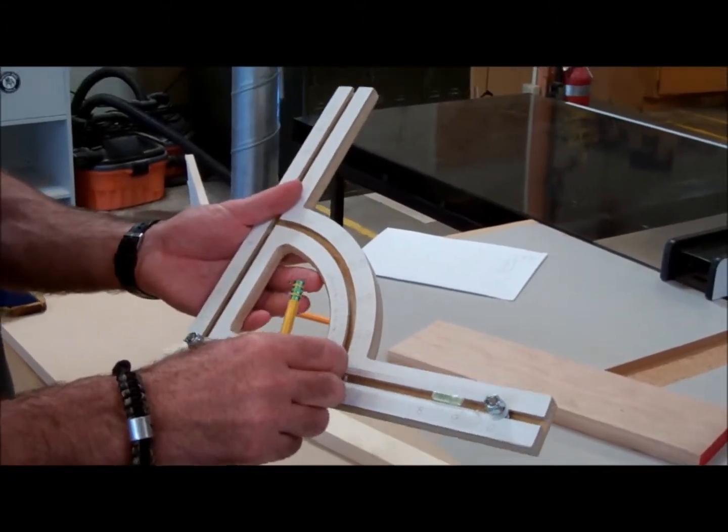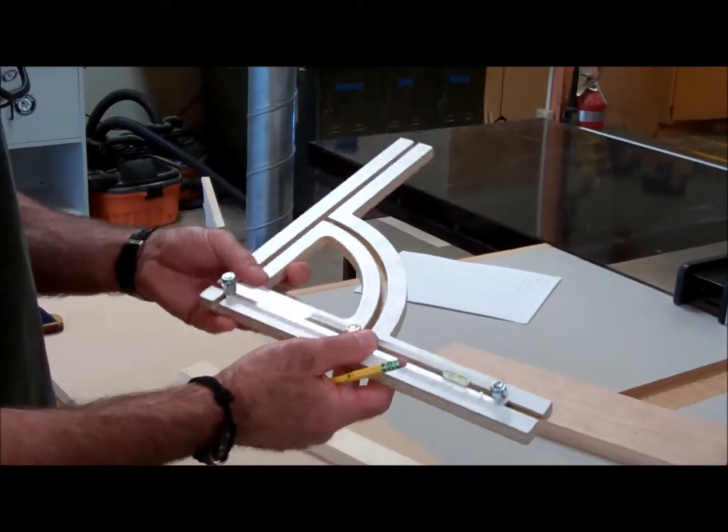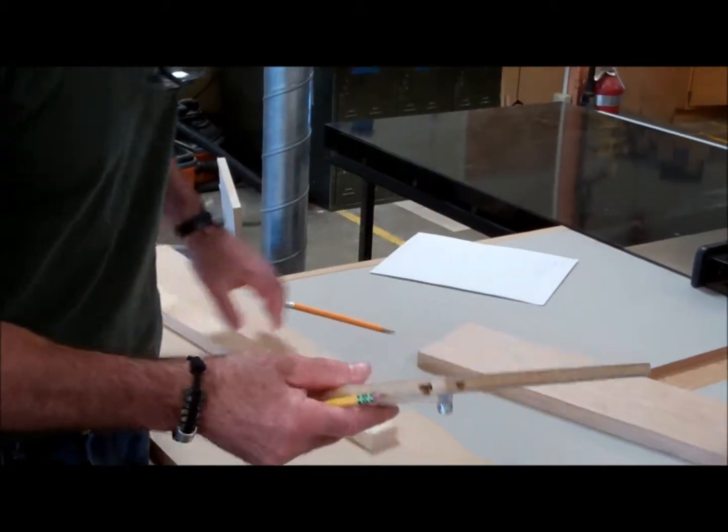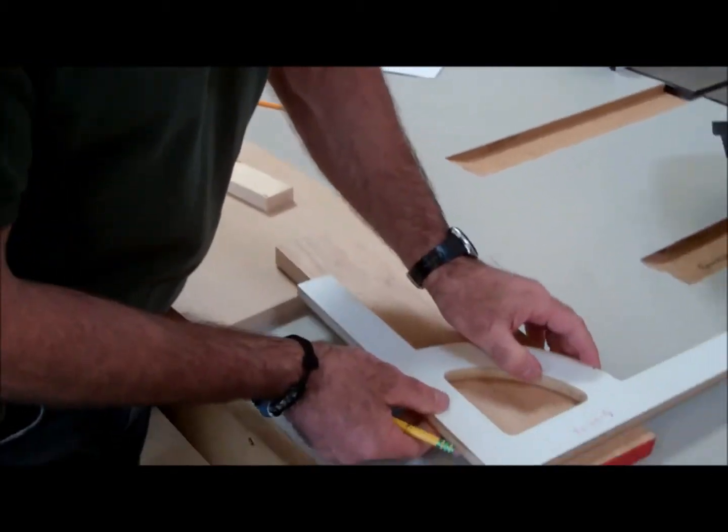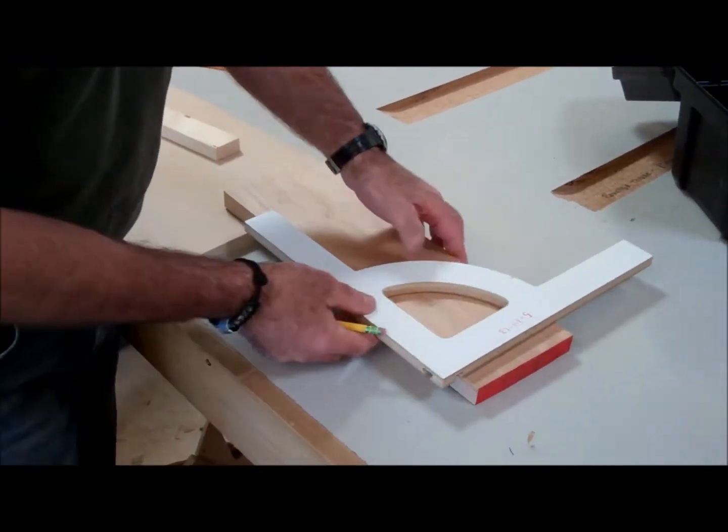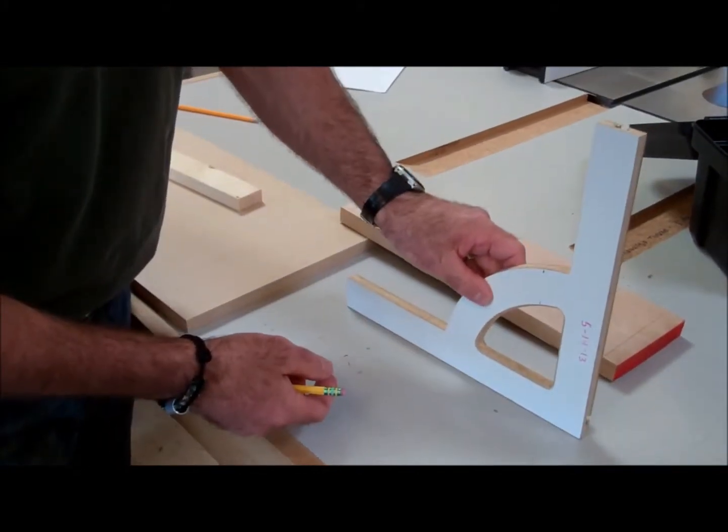I could also use this tool to set anything square. So if I lock that there, I want to square up a board or a blade. I could do that easily. I could hold it up towards your blade to make sure they're square.